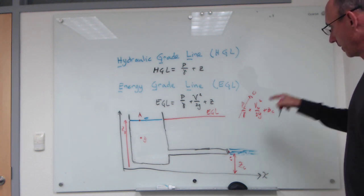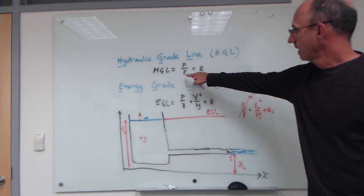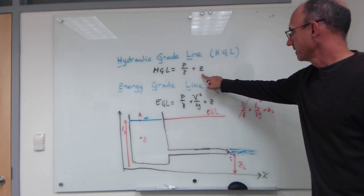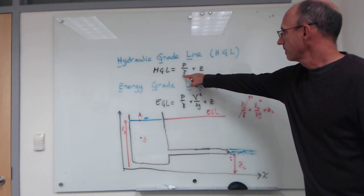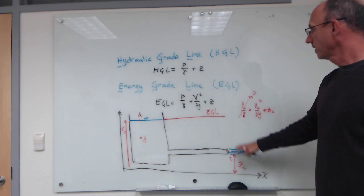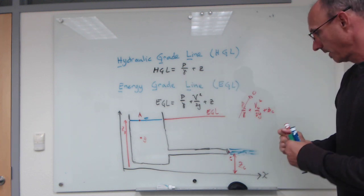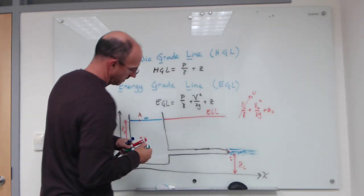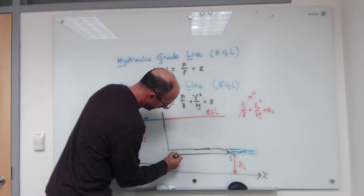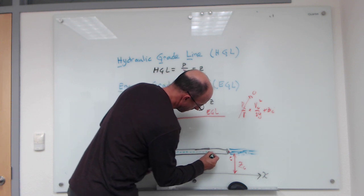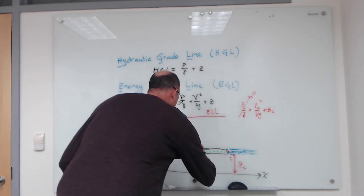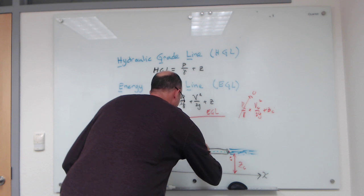So what you'll notice: the pressure is zero. Hydraulic grade line is pressure plus height, so since the pressure is zero, the hydraulic grade line at this location is simply given by the height z. That means the hydraulic grade line is actually a line that goes right through the center of the pipe. We'll call that hydraulic grade line.